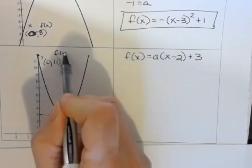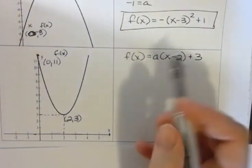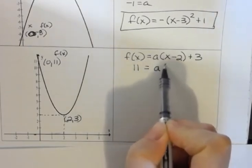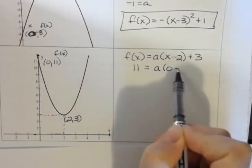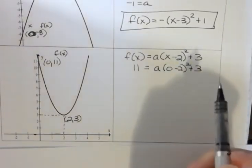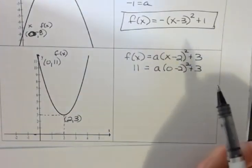If this is f of x. So f of x is 11. I don't know a. I have 0 minus 2 squared plus 3.